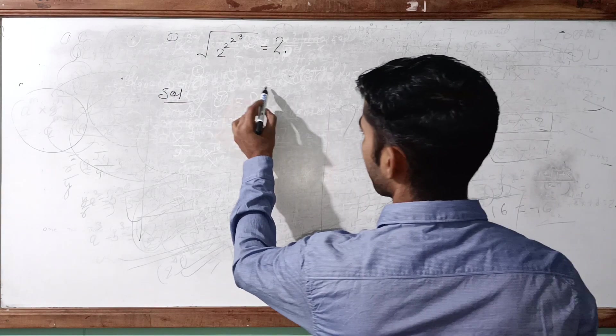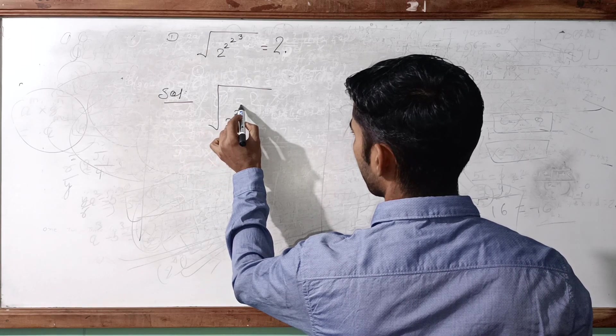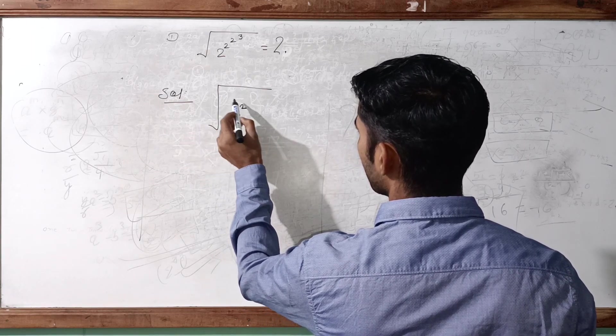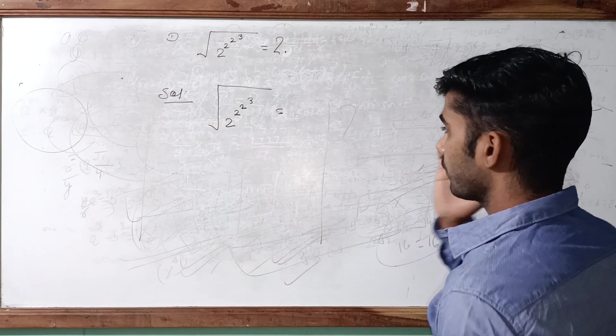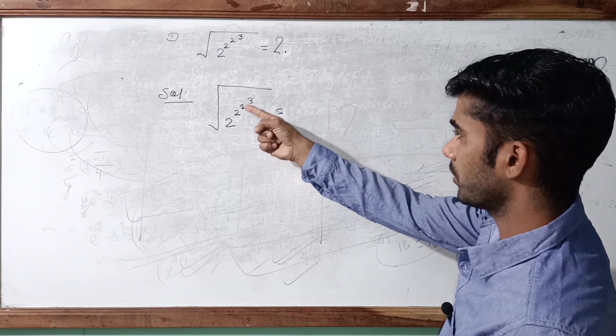In solution, we write first of all we have been given square root of 2 then raised to 3. So what we see here, 2 raised to 3, first of all this 3 is the exponent of this 2.